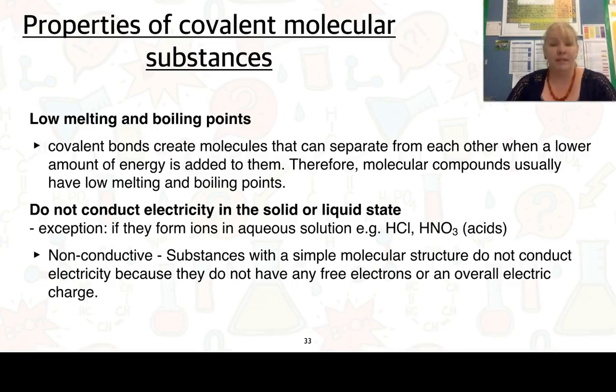We also need to look at properties of covalent molecular substances and covalent networks. Covalent molecular substances will end up having low melting points and boiling points. The reason for that is that the molecules can separate from each other when a lower amount of energy is added to them, lower in comparison to metals or ionic compounds. Therefore, molecular compounds usually have low melting points and low boiling points. They do not conduct electricity in the solid or liquid state. There is an exception if they form ions in aqueous solution. But in general terms, they are non-conductive because they do not have any free electrons or an overall electric charge.